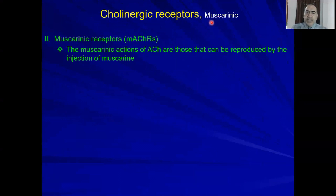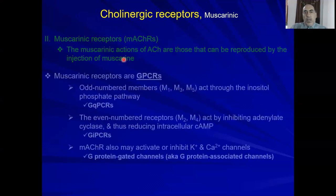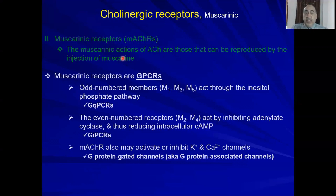The second subtype of cholinergic receptors is muscarinic receptors. They are called muscarinic because the action of acetylcholine on these receptors can be reproduced by the injection of muscarine — an alkaloid that can activate muscarinic receptors. Nicotinic receptors are ligand-gated ion channels, whereas muscarinic receptors are G-protein-coupled receptors.